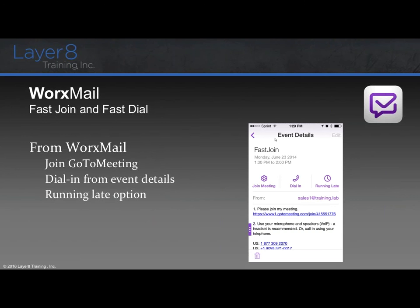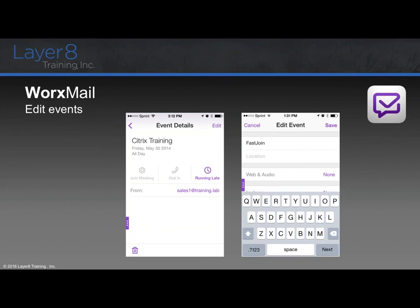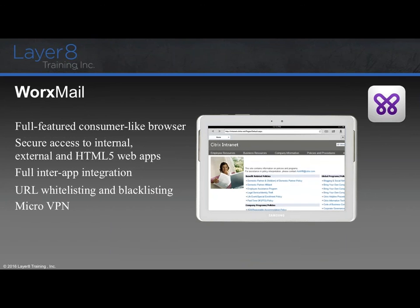Works Mail has ActiveSync policy support so you can control sync settings, limit email size, allow direct push when roaming, control attachments and HTML formatted emails, and define maximum attachment size. We also have fast join and fast dial — from Works Mail you can directly join a GoToMeeting, dial in from event details, or send a quick email to everyone on the invite list saying you're running late. You can even set your out of office from your mobile phone, configure your time duration, and edit events directly through Works Mail.